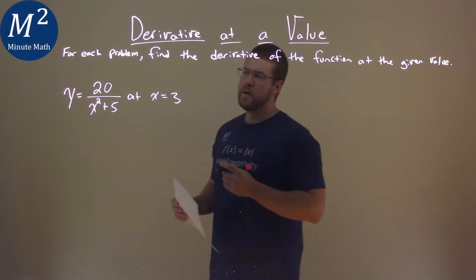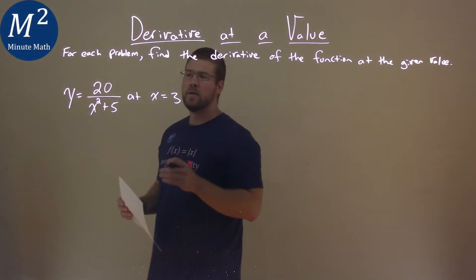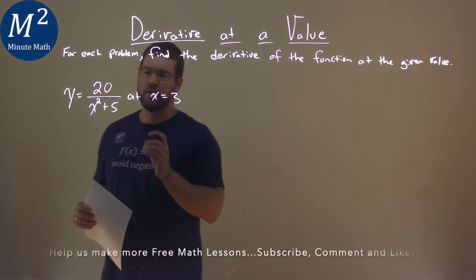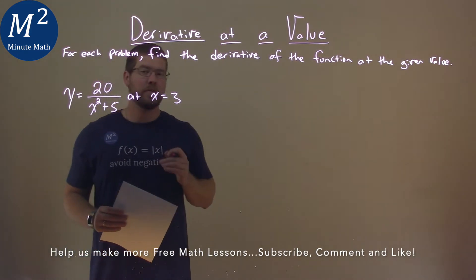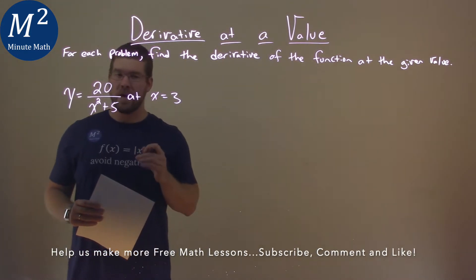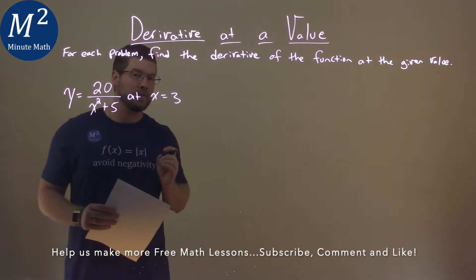We're given this problem right here: y equals 20 over x squared plus 5, and we need to find the derivative of that at x equals 3.